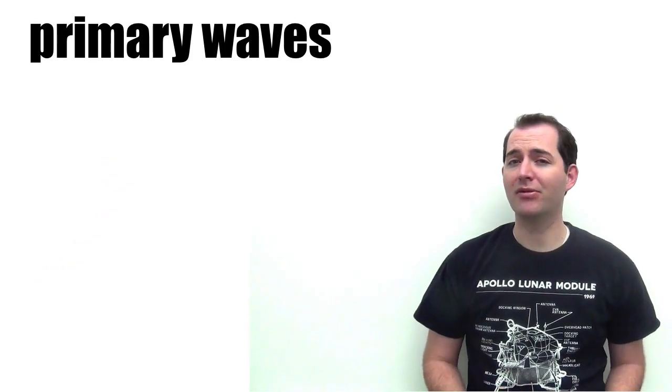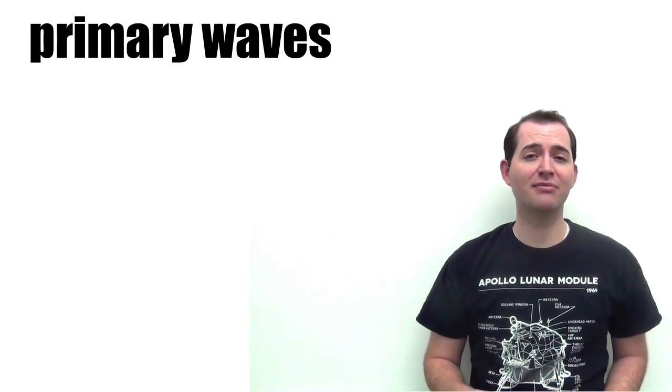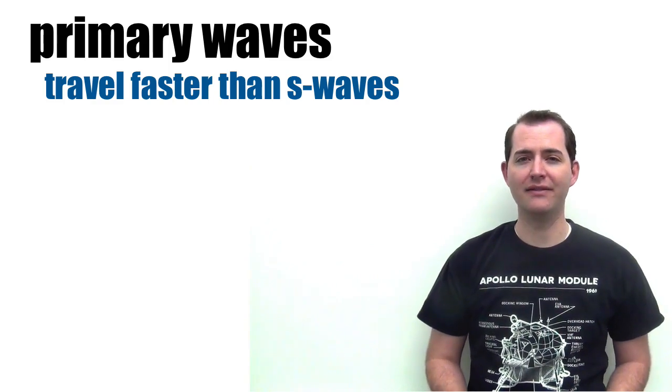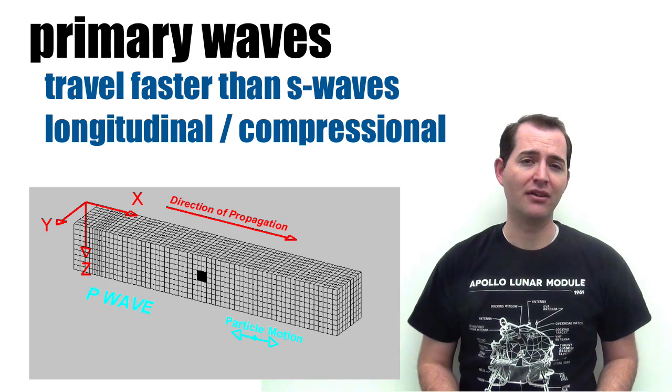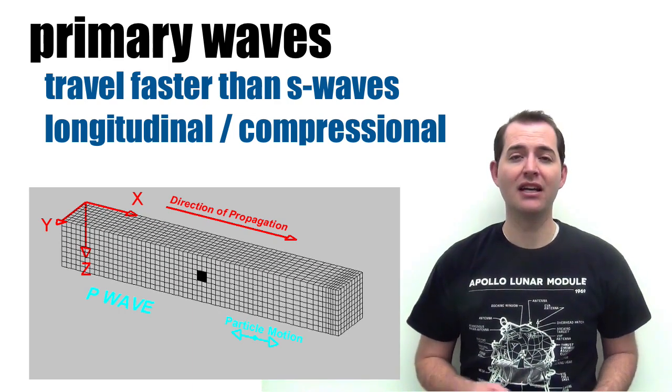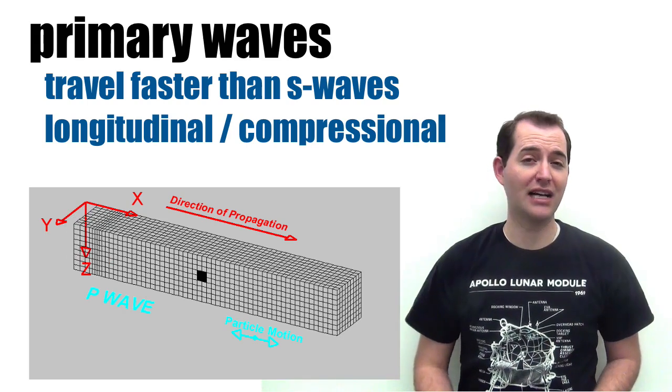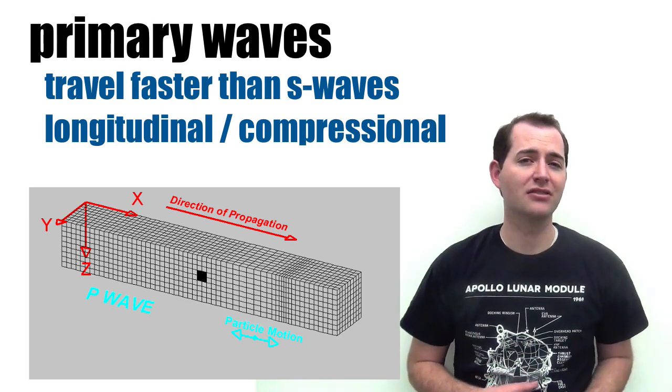P waves, or primary waves, are the waves that are first detected at a location, and this is because primary waves travel faster than S or secondary waves. Primary waves are classified as a longitudinal wave, which means that the displacement of the medium, or in this case the Earth, is displaced in the same direction as the wave is traveling. Longitudinal waves are also known as compressional waves.